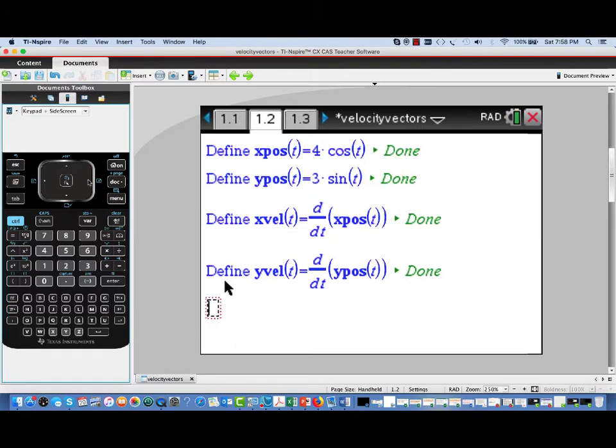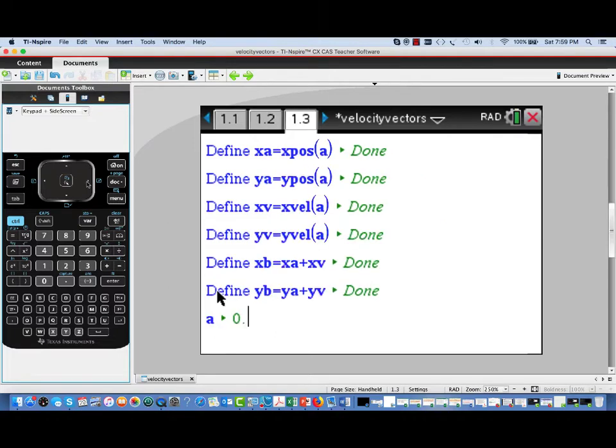Here's the setup. We're defining position functions that describe an ellipse parametrically. X-pos and Y-pos are the positions: 4 cosine t for x, 3 sine t for y. And below, we've taken the derivatives of these position functions, and those are giving us the components of the velocity. So that's Xvel and Yvel.